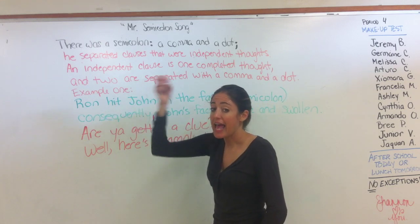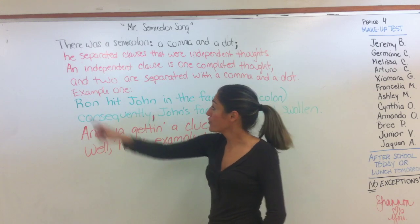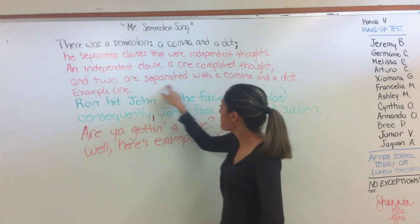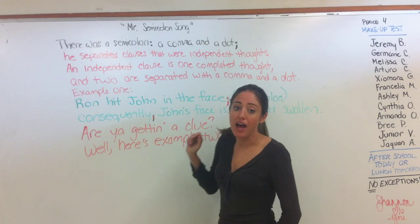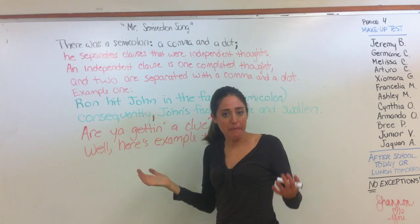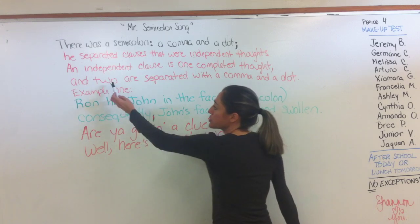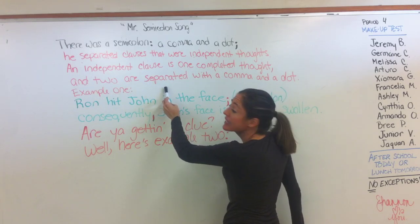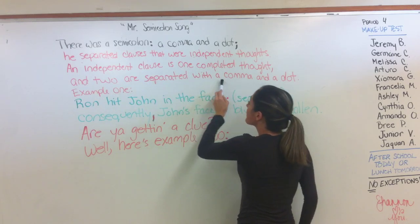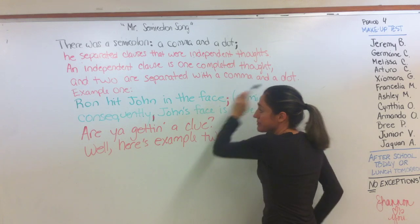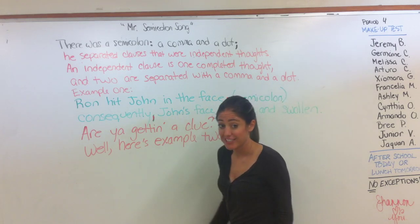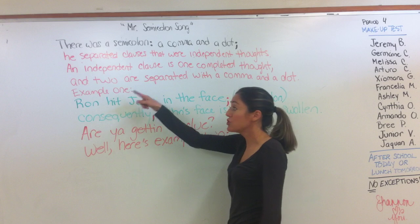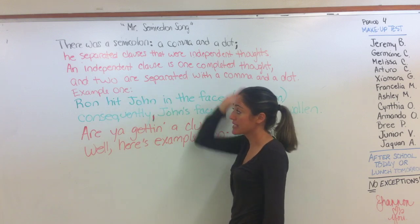Next line — and line four: 'two independent clauses are separated with a comma and a dot' — meaning with a semi-colon. Check your spelling of 'separated.' Write: 'and two are separated with a comma and a dot.'